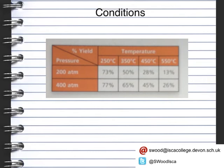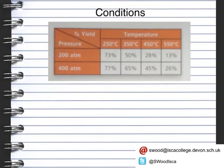In your exam you might be asked to interpret information like this to help predict or suggest the actual conditions for the Haber process. To reiterate: if we increase the pressure, the yield increases; if we increase the temperature, the yield decreases but the rate of reaction increases. It's quite key to remember that.